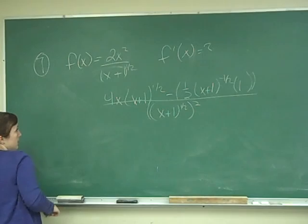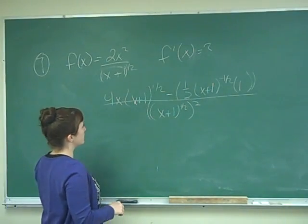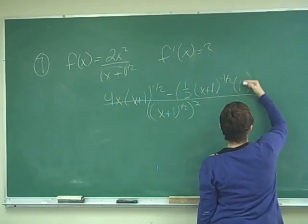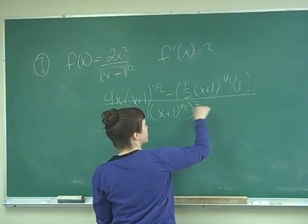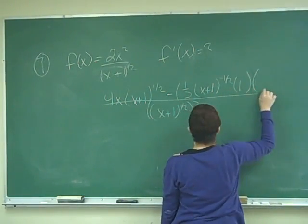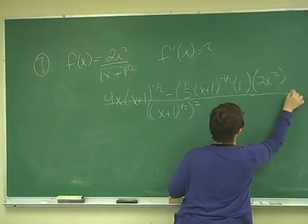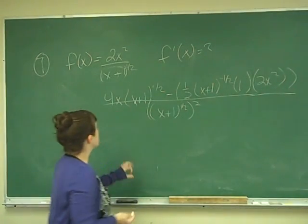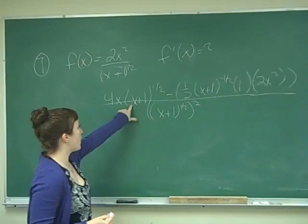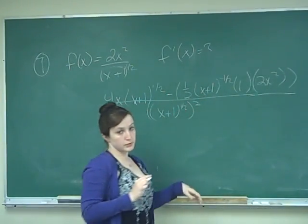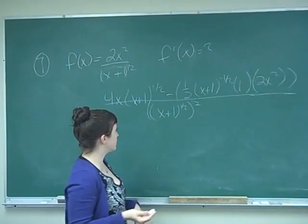All right, so with this, we can do some things first. Oh sorry, and here I forgot, because we did the derivative of the low, and then you need to times it by the high, which is 2x squared. All right, now, okay, so we have the derivative of the high times the low, minus the derivative of the low times the high all over low squared. So that's our quotient rule for derivatives.